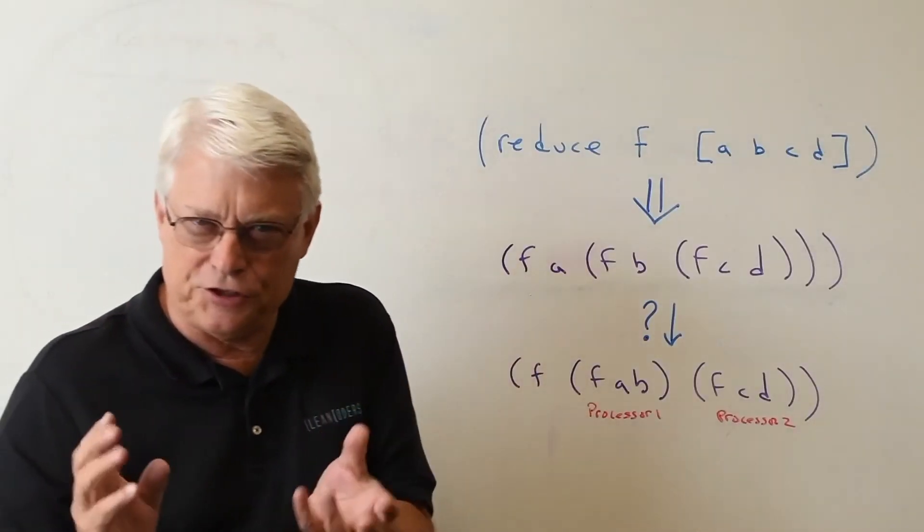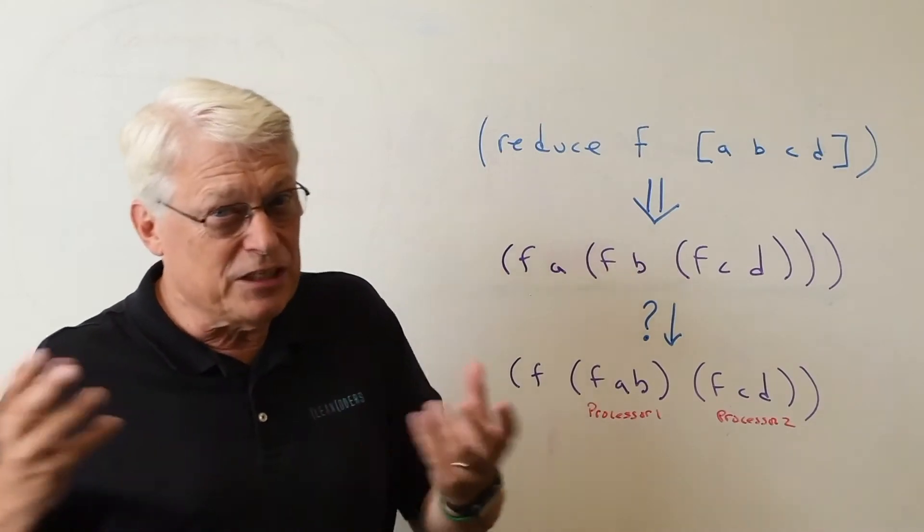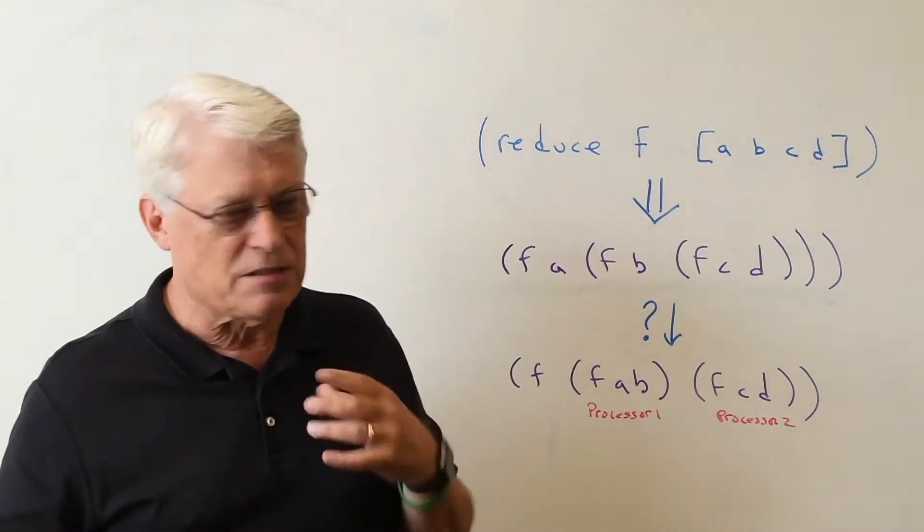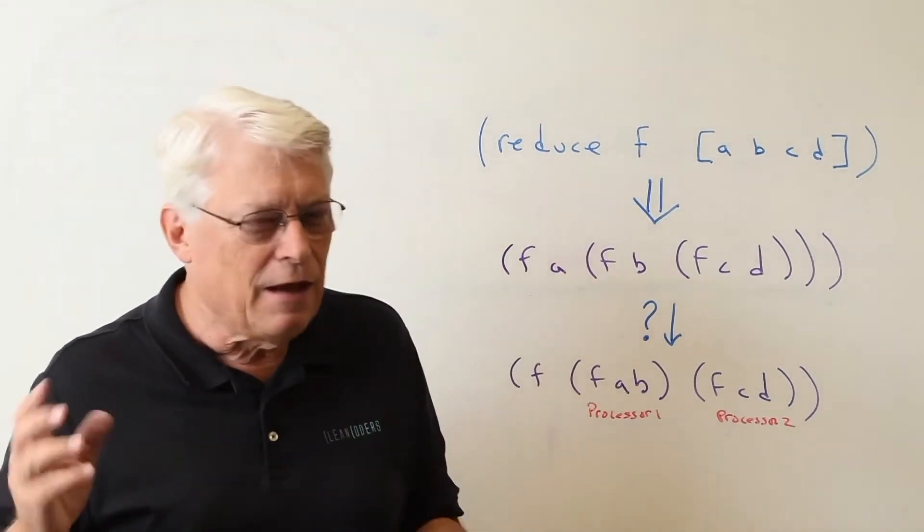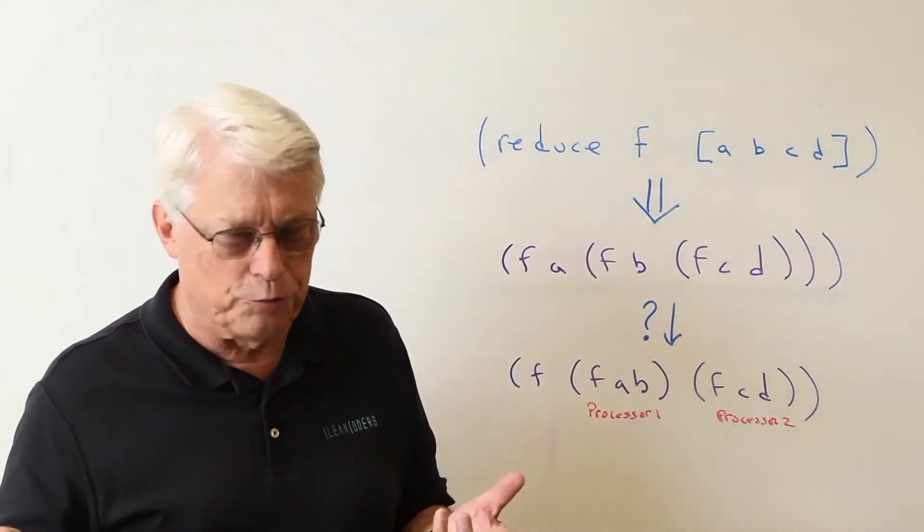Our binary function must be associative — it doesn't matter how the functions are grouped. When you multiply and divide floating point numbers, low-order bits can fall off the end, and so precision can be reduced.